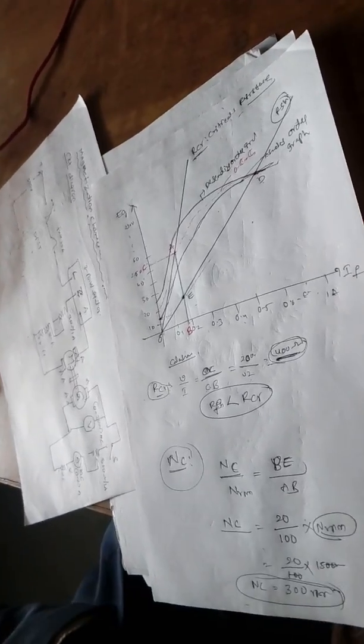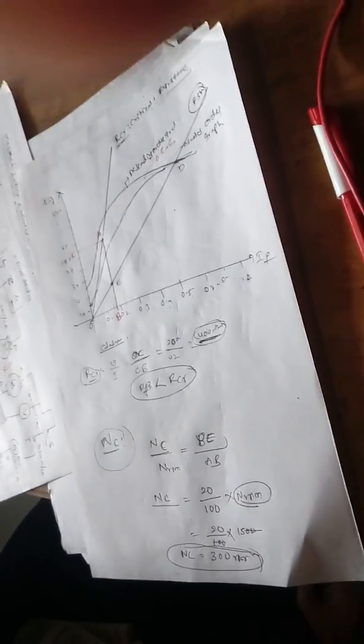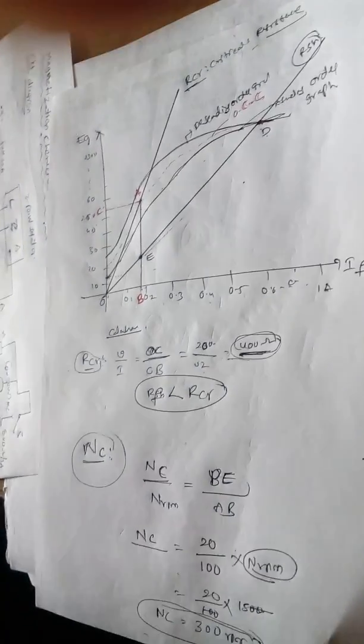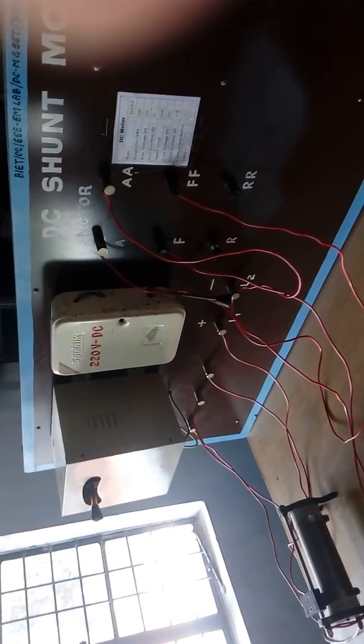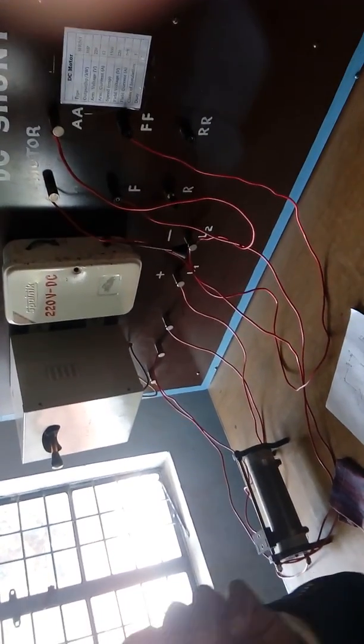We keep increasing the field current and observe how the armature voltage increases. Then decreasing the field current and how the armature voltage decreases. Initially it is 15 volts. In the descending order case, the graph drawn is slightly above 15 volts — some voltage is left in the generator terminal. That voltage is called residual voltage. Due to the residual magnetism, some voltage will still be generated in the generator.